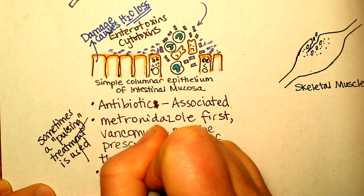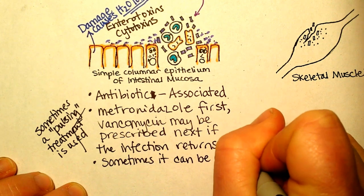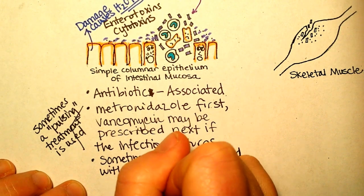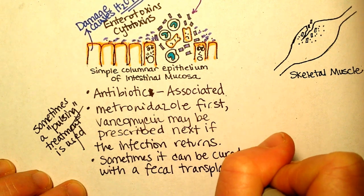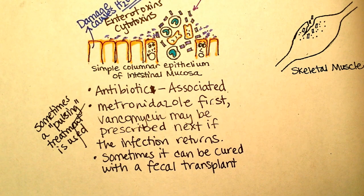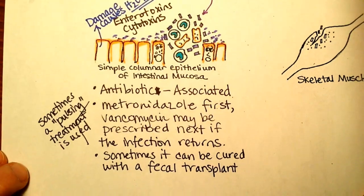Another treatment is a fecal transplant. People used to laugh at these, but they are becoming well-known in the medical community with clinical trials in the U.S. If someone can demonstrate with testing that they have healthy fecal matter with lots of variety of normal flora, they can donate their stool, which is transplanted into someone with chronic C. diff. It works — some clinical trials show it's about 90% effective, which is absolutely amazing. It goes to show that C. diff is truly a disease of floral imbalance.